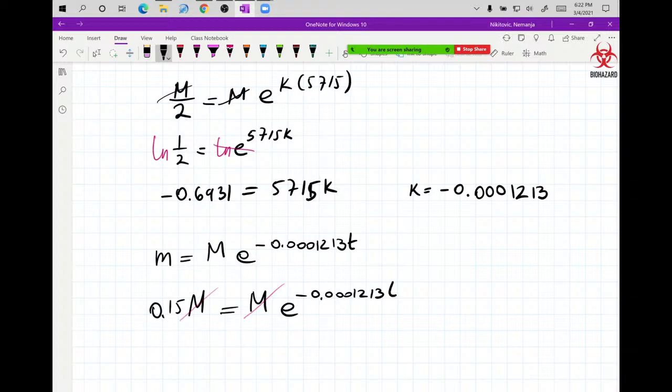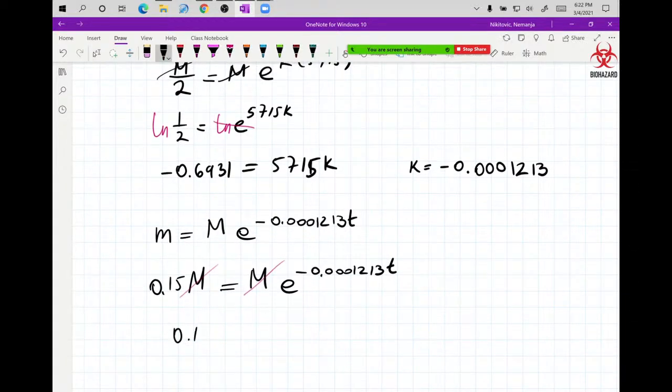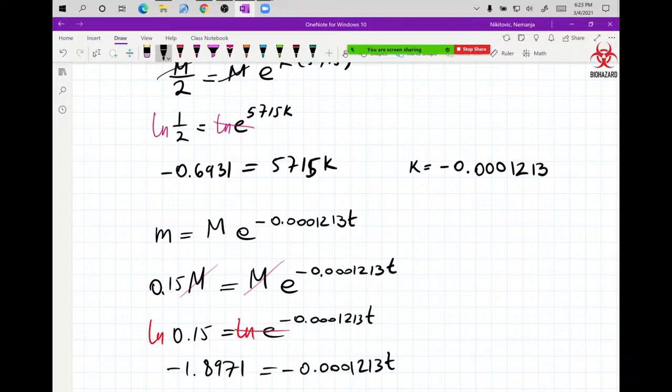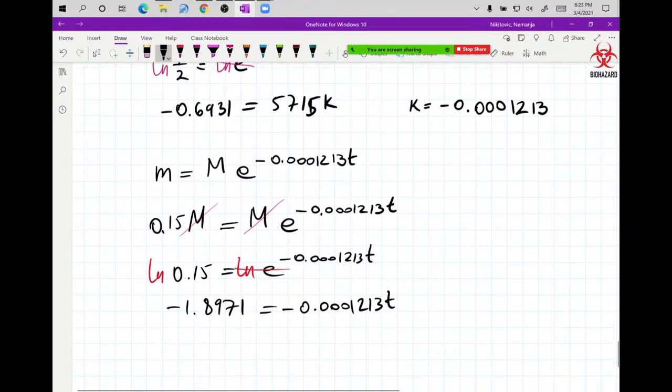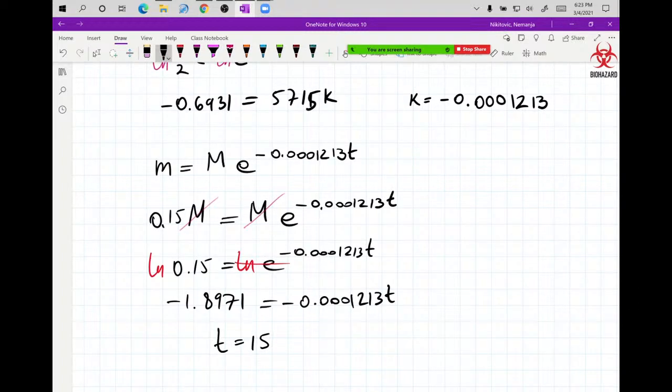It's not that it lost 15% of its mass. There's only 15% of the mass left. Which is why we're going to have now 0.15 of the original mass is left. And then we cancel those M's. And you have your now 0.15 is equal to E to negative 0.0001213T. You hit both sides with LN. That kills E. So now we need LN of 0.15. LN of 0.15 is negative 1.8971 equals to negative 0.0001213T.